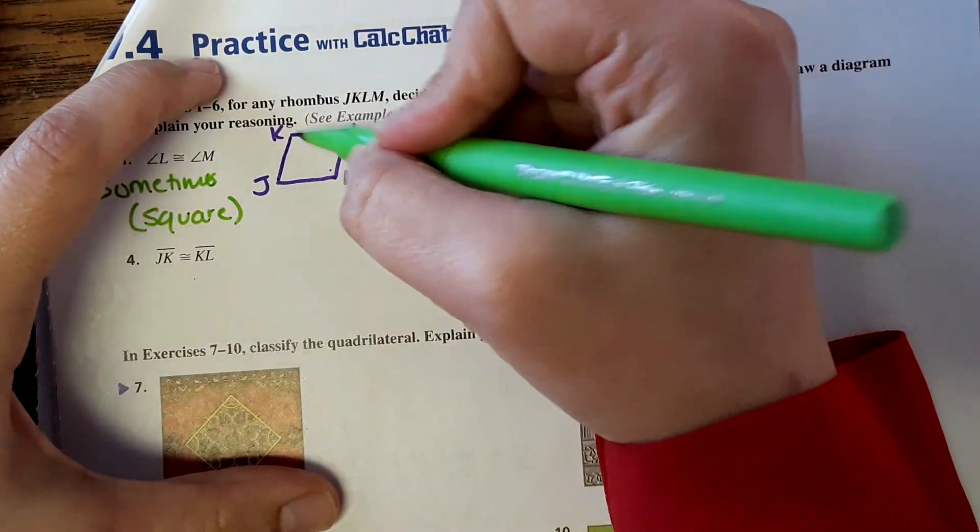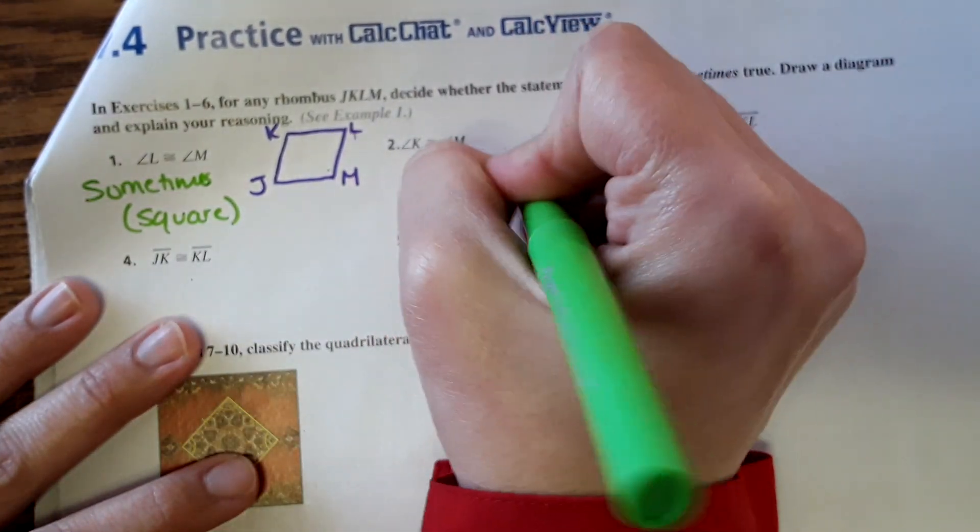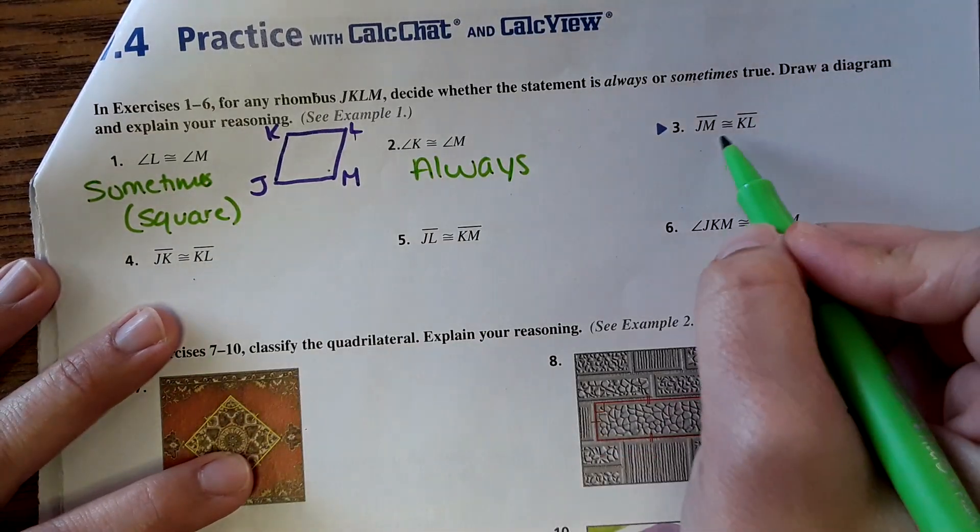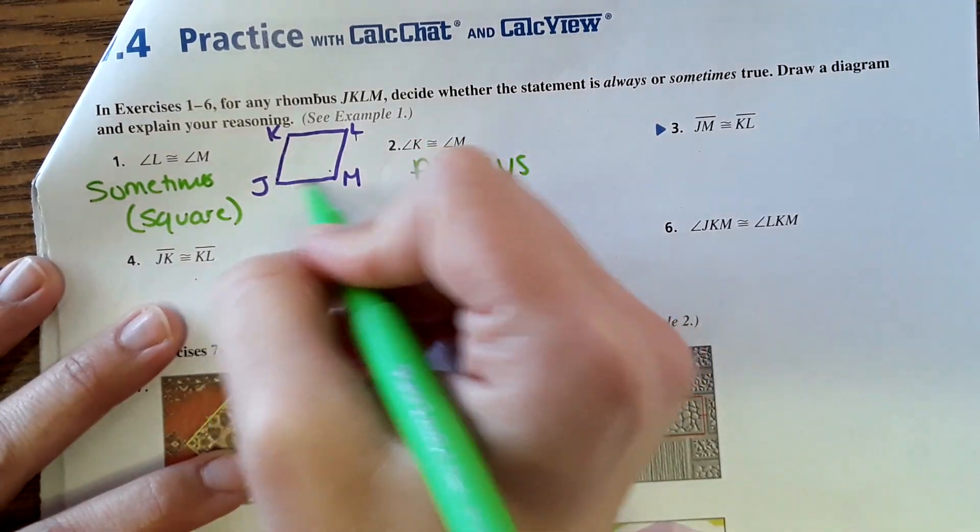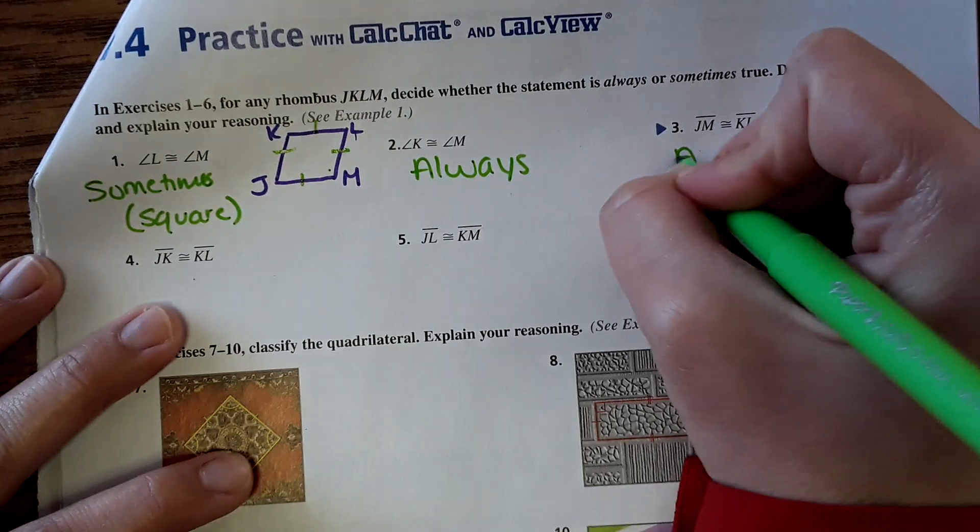And then it says angle K is equal to angle M. That would be always. JM equal to KL. Well, in a rhombus all the sides are equal, so that would be always.